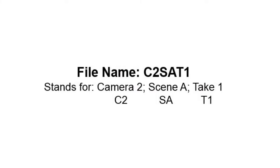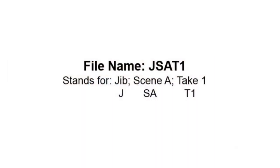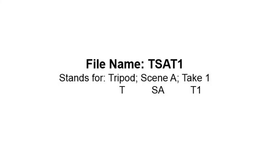Using abbreviations will cut down a massive amount of time in post since you're not having to write out the full words scene and take each and every time. If I had multiple cameras, I would abbreviate that as well. So each file would be named something like C2SAT1, which would stand for camera two, scene A, take one. I could make this easier if my cameras were mounted in different ways — for instance, if one camera was on a jib and the other was on a tripod, I would label one file J for jib and the other T for tripod. This also helps in editing, so if I'm looking for a moving crane shot, I would only look for the jib shots for that scene.